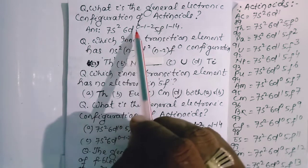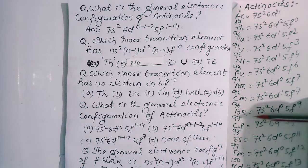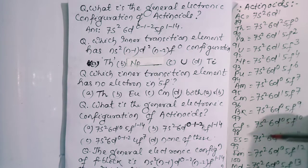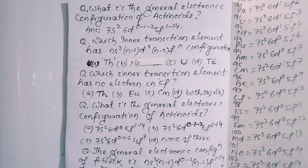6d⁰ in case of Pu-94, Americium-95, Berkelium, Californium, Einsteinium, Fermium, Mendelevium, and Nobelium have 6d⁰ configuration.